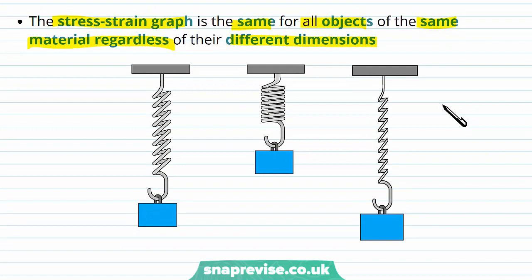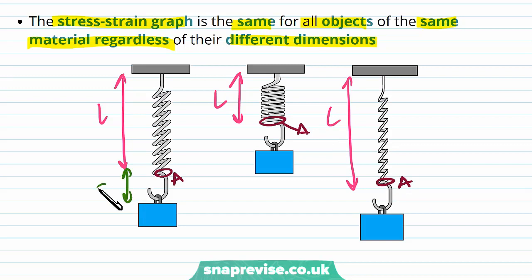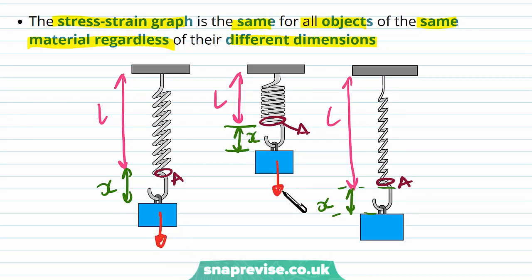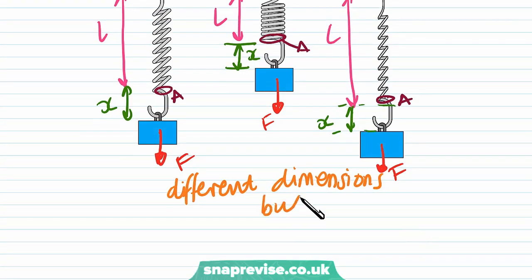For example, we have three completely different springs, but they're all made of the same material. Even though they've all got different dimensions — different natural lengths and different cross-sectional areas — and therefore all have different extensions, when we apply a force F to each of these springs we actually get the exact same stress strain graph, because they're all made of the same material. So despite having different dimensions, we still get the same stress strain graph.